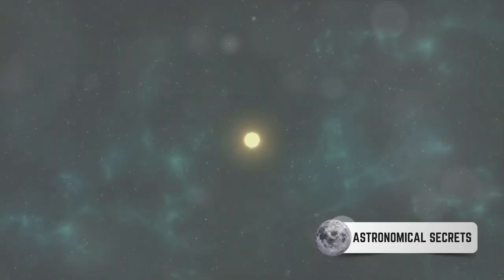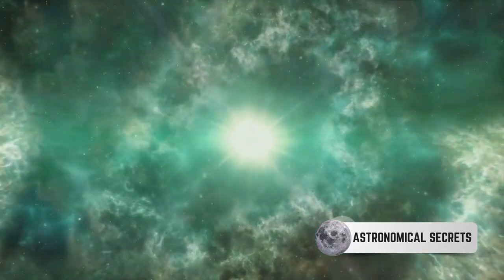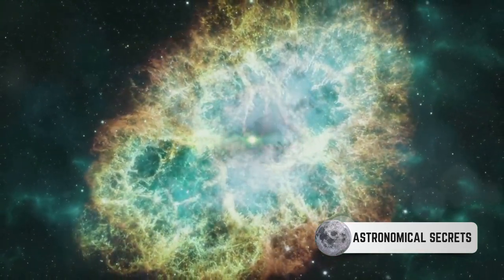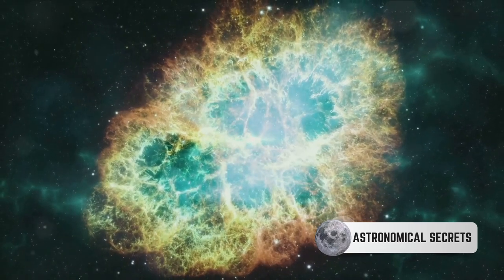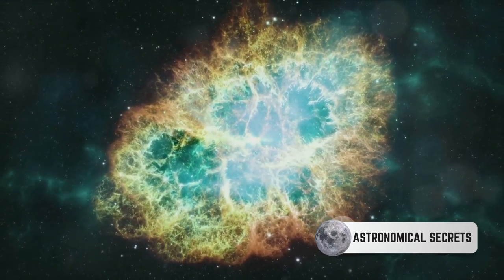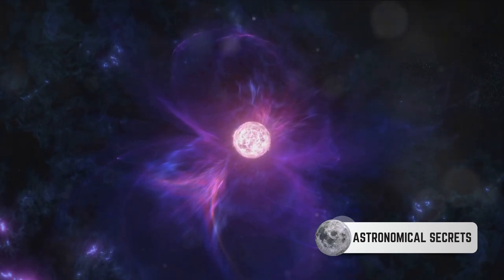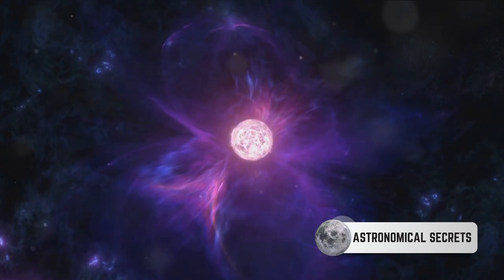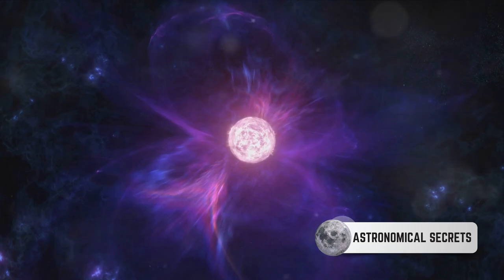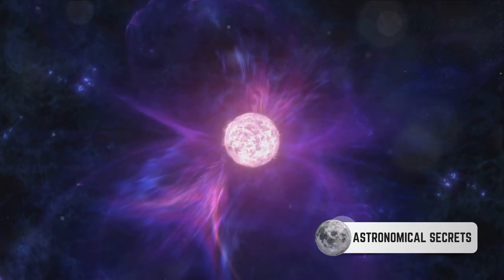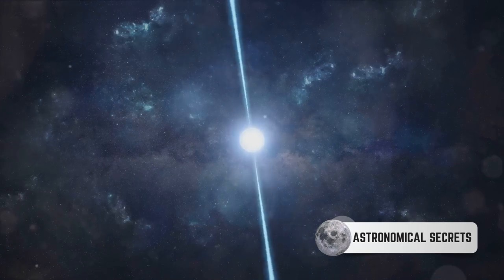But what exactly triggers such a cataclysmic event in the cosmos? To understand the birth of a Type 1a supernova, we must first acquaint ourselves with the humble celestial objects known as white dwarfs. These are the dense, hot remnants of stars like our own sun. Having exhausted their nuclear fuel, these stars shed their outer layers, leaving behind a hot core that cools and dims over billions of years. Hence the name white dwarf.